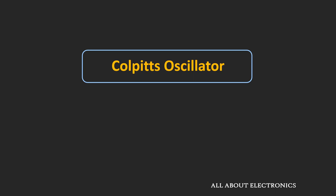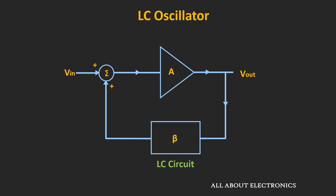Hey friends, welcome to the YouTube channel all about electronics. In this video, we will learn about the Colpitts oscillator. This Colpitts oscillator is one kind of LC oscillator and it is used for the generation of a high frequency signal, typically in the range of radio frequencies.